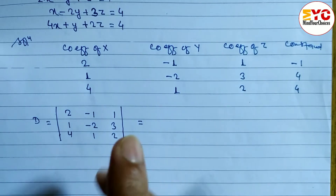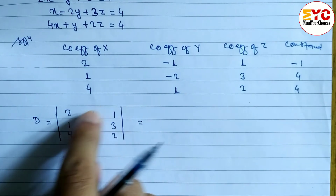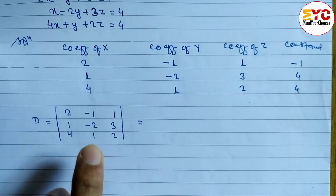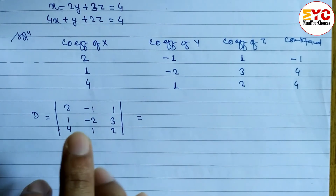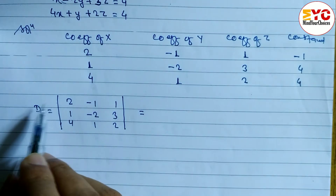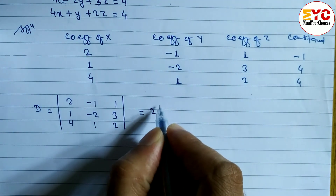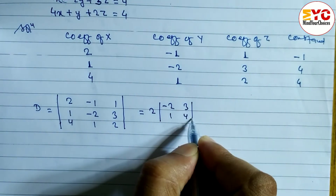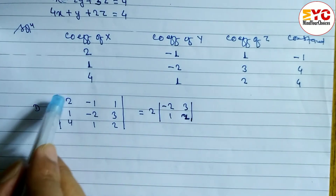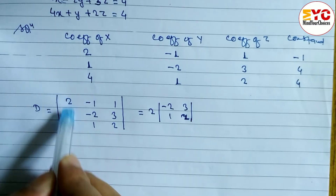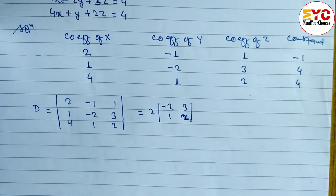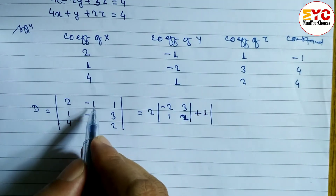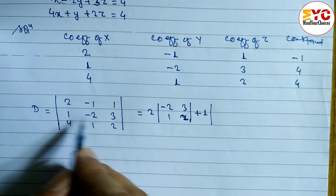We can solve this using row expansion, column expansion, or Sarrus's rule — three methods are available. I'm going to use the row-wise method. For element 2, the minor is the 2x2 submatrix: minus 2, 3, 1, 2. Next, element minus 1 — the sign from the formula makes it plus 1 — and its minor is 1, 3, 4, 2.